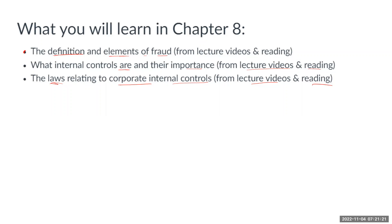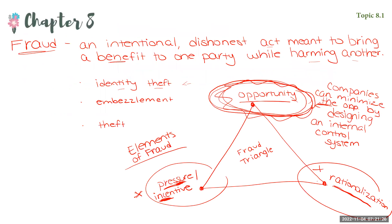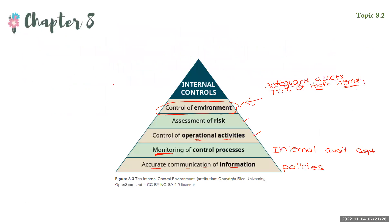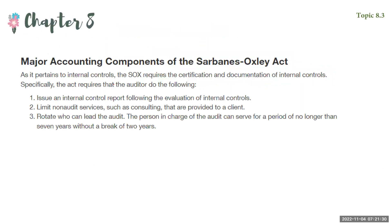Lastly, we have the laws relating to corporate internal controls. The law that was created to address the lack of internal controls seen at the corporate level was the Sarbanes-Oxley Act of 2002. It has lots of different specifications, but one of them relates to internal controls.